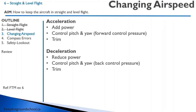If we want to decelerate, we reduce power. This will cause the aircraft generally to pitch nose down, so we're going to apply aft control pressure and we might have some yaw. Then we trim the aircraft.